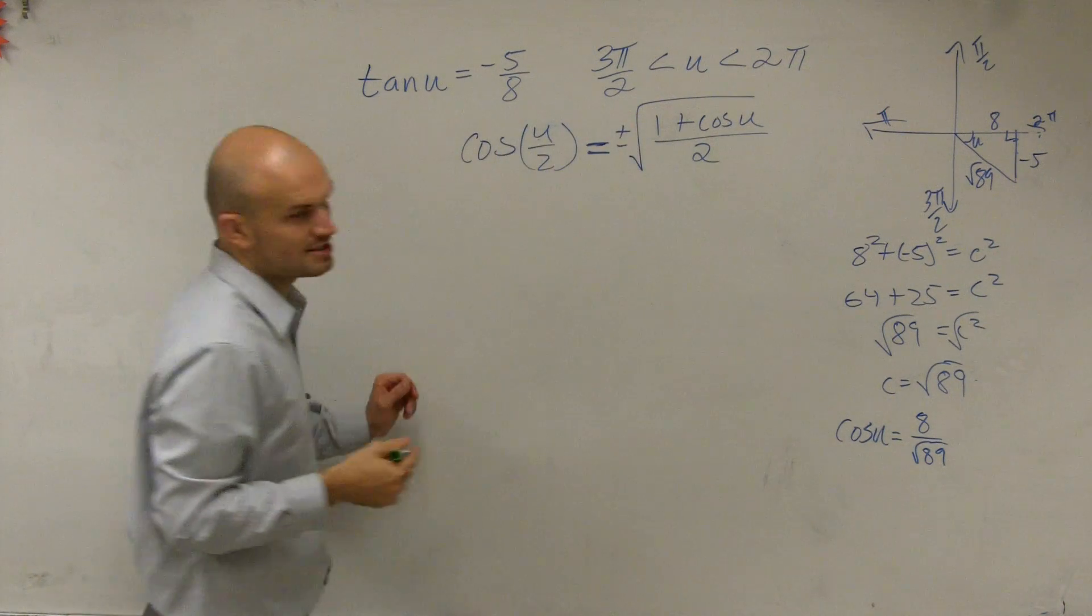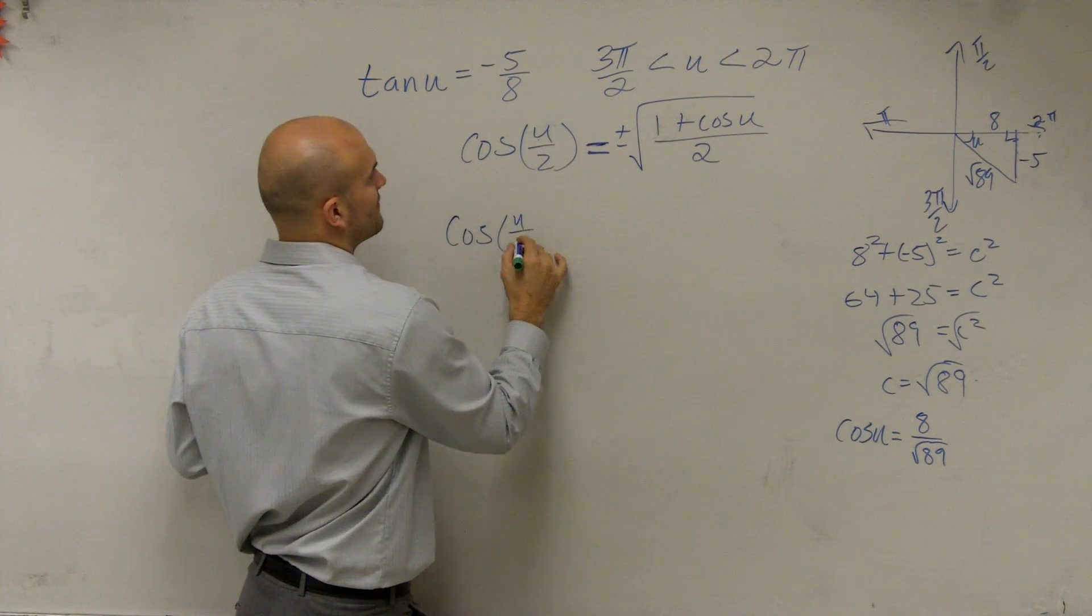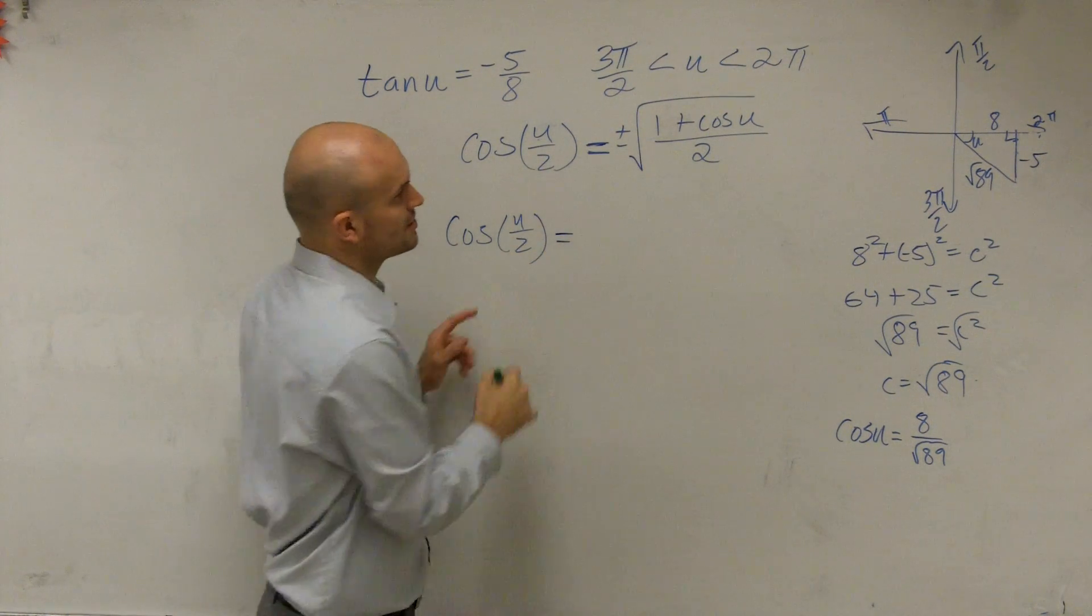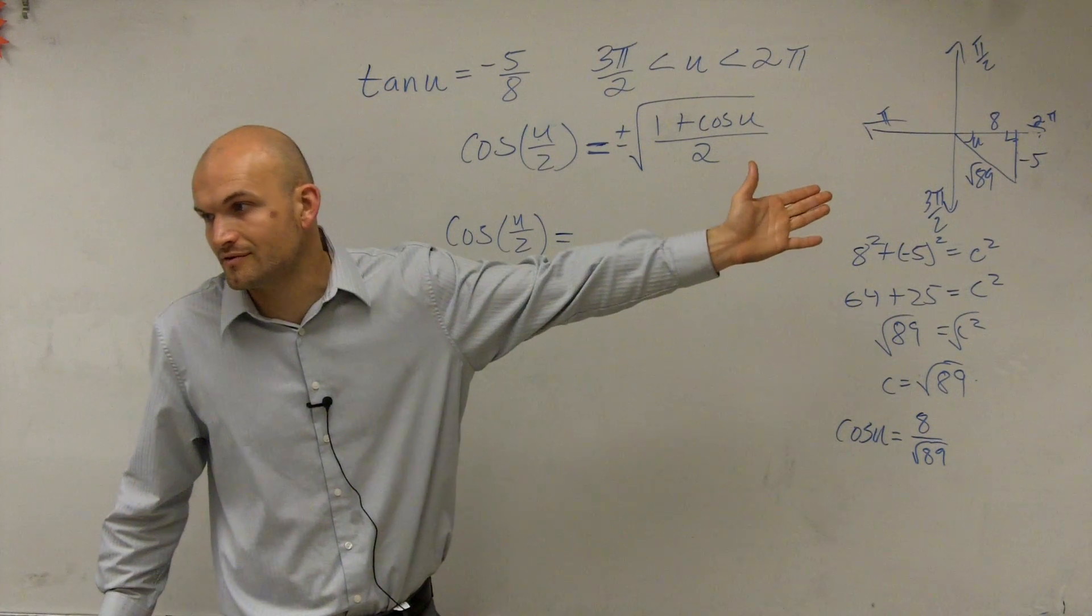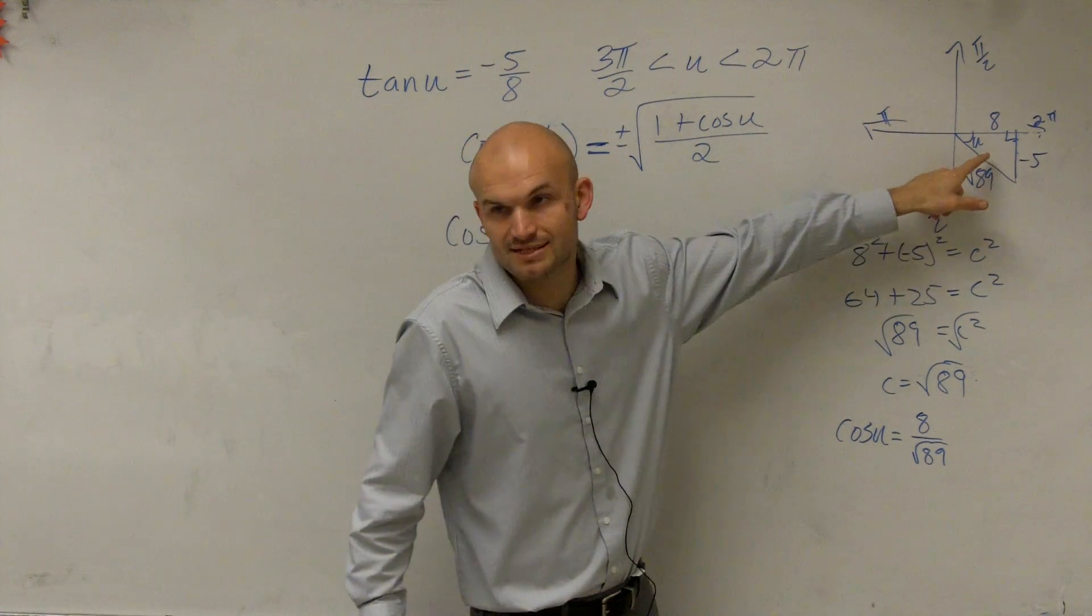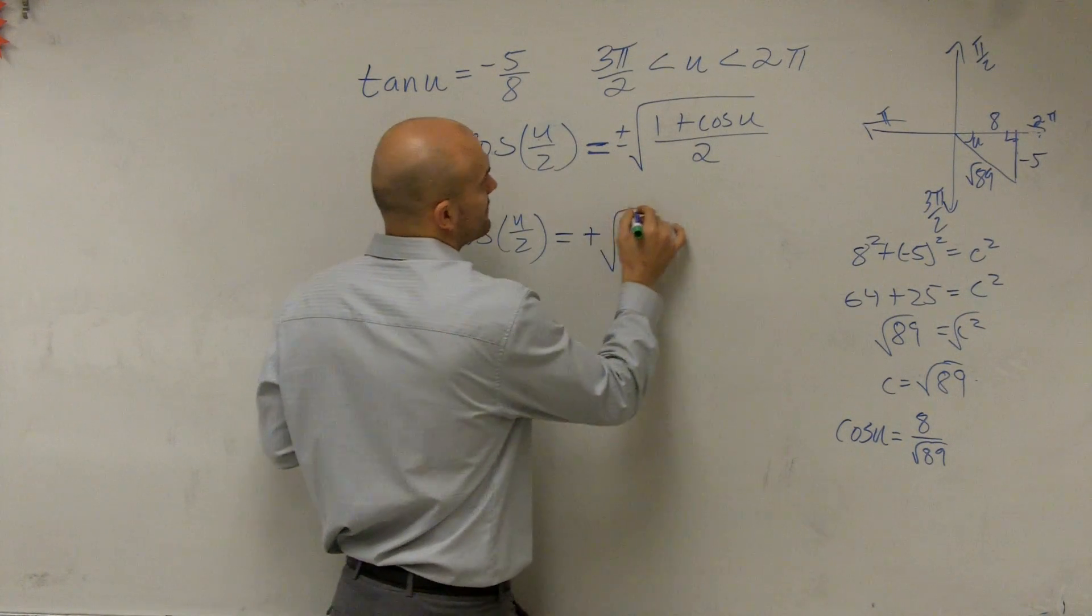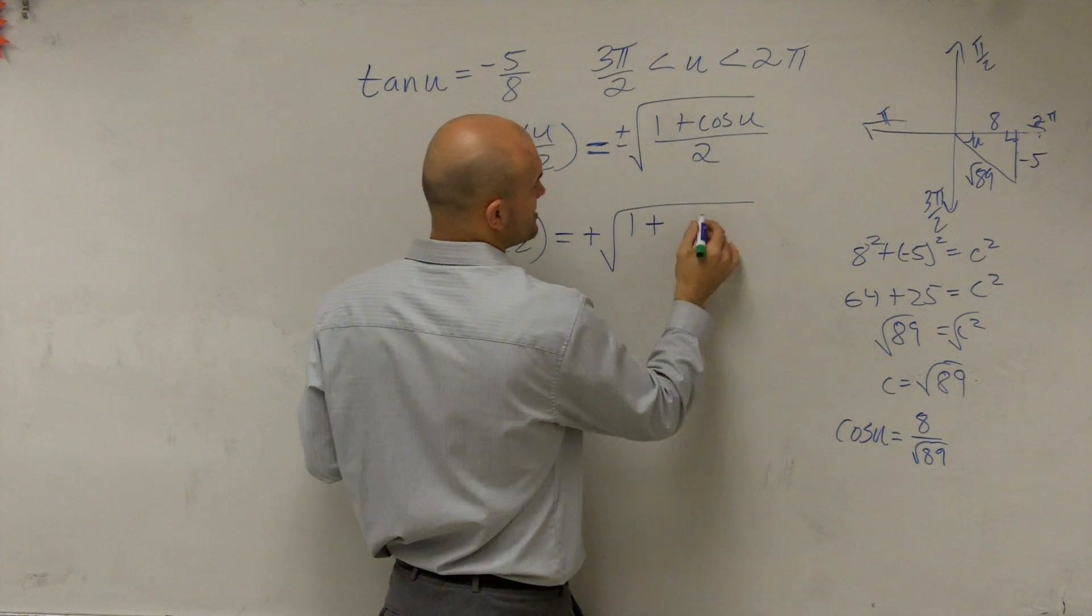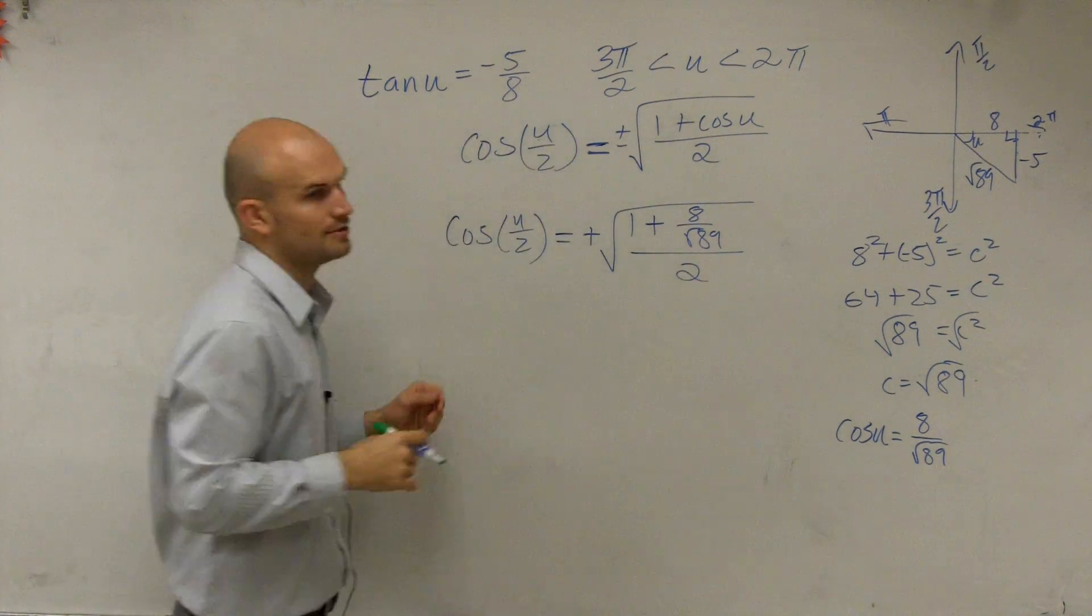So now let's plug this into the formula. We could say the cosine of u divided by 2 is now going to be equal to, now let's look at the cosine in this quadrant. My cosine value is positive or negative? Positive. Cosine is positive in the fourth quadrant. So therefore, I'm going to deal with the positive square root of 1 plus 8 over square root of 89, divided by 2.